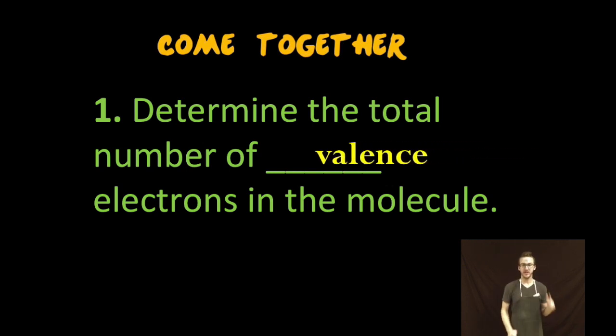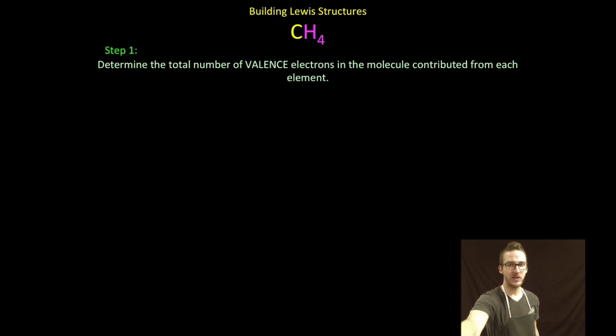Step one, determine the total number of valence electrons in your molecule. So for an example, I'm going to use CH4. Carbon has four valence electrons, and hydrogen has a single valence electron. Now there's one atom of carbon, so in total, all the carbon in this molecule is going to contribute four valence electrons.